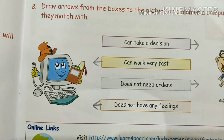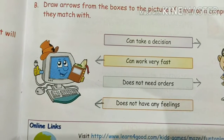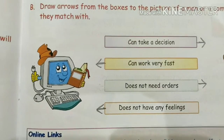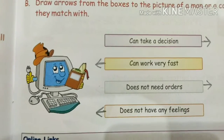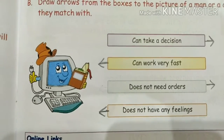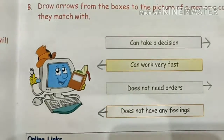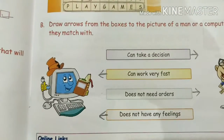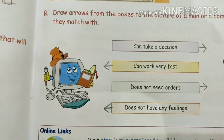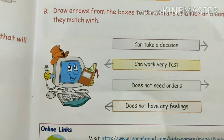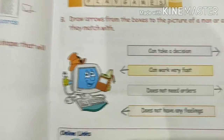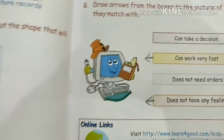Does not have any feelings — who does not have any feelings? Computer. So the last arrow will be on the computer side. With this we come to the end of the exercises of Chapter 1, that is Computer a Machine.